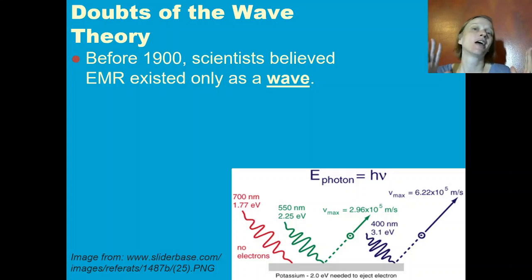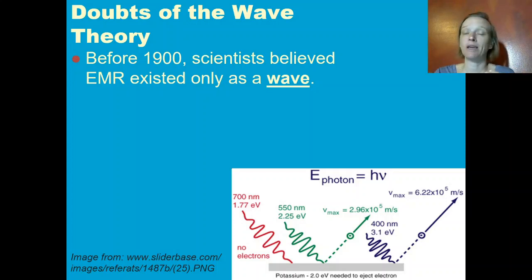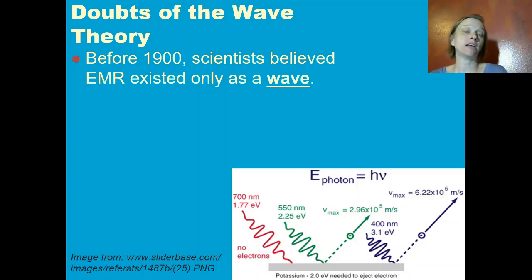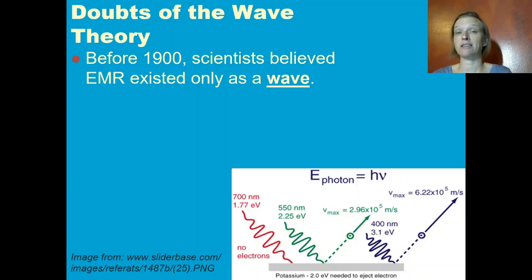In the last section, we were assuming that light is a wave. Because before the 1900s, scientists did believe that electromagnetic radiation existed only as a wave.